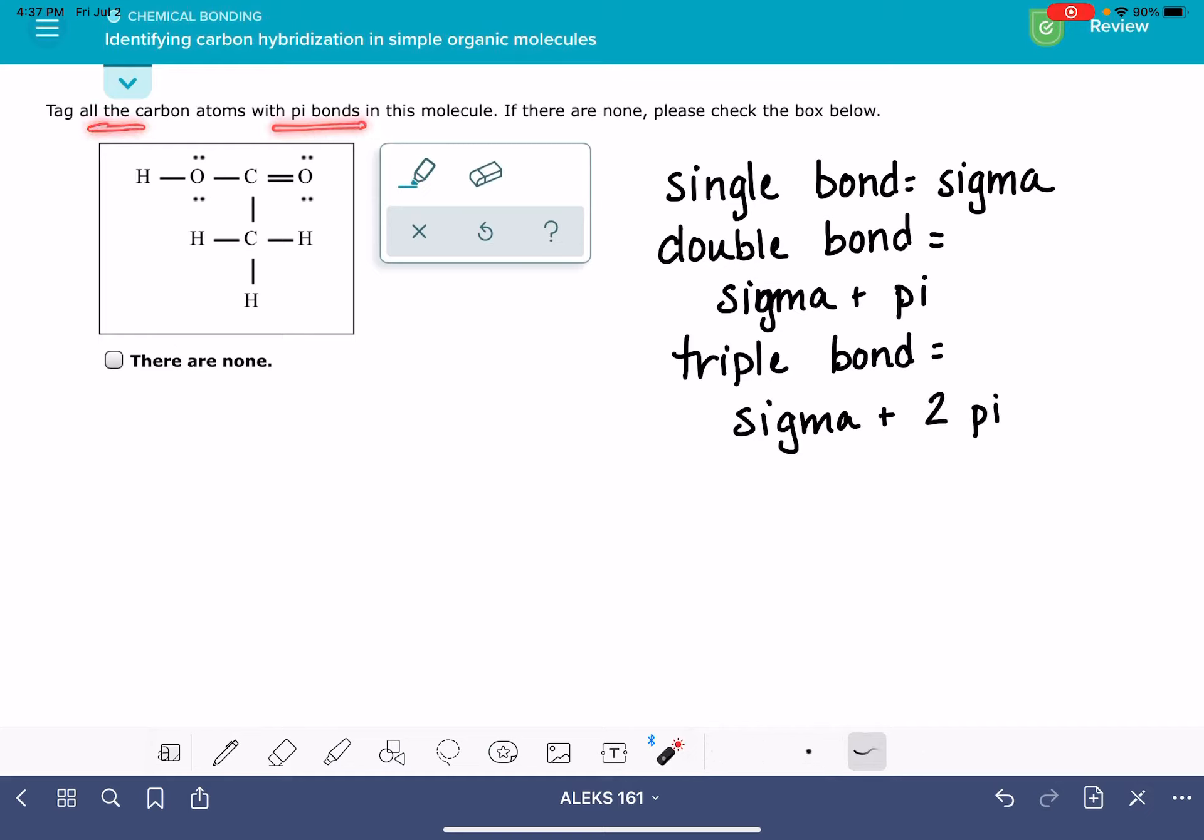carbon atoms that have pi bonds, that means we're looking for carbon atoms that are associated with double bonds or triple bonds, but not single bonds.